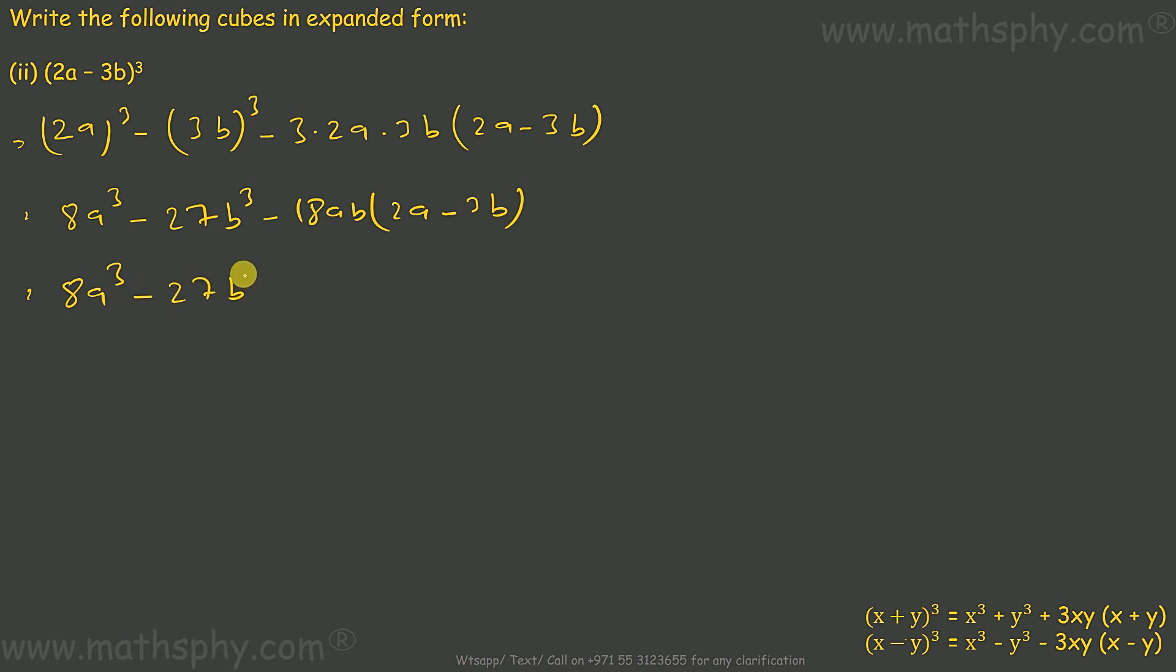Minus 18 into 2 gives 36ab into a, which is a square b. Minus minus gives plus 18 into 3 gives 54ab into b, which is ab square.